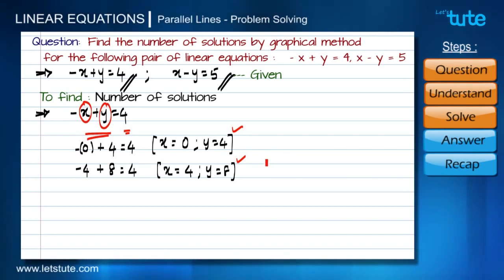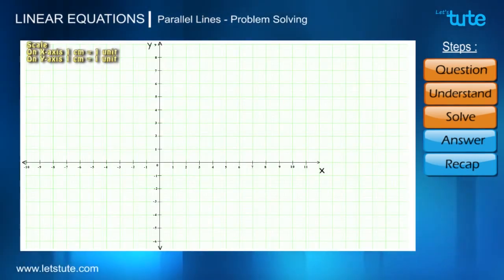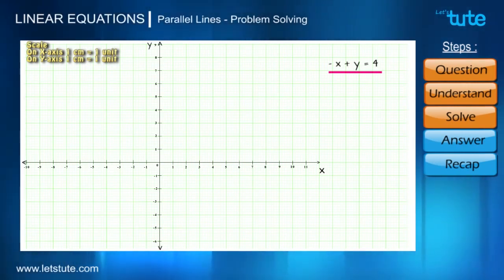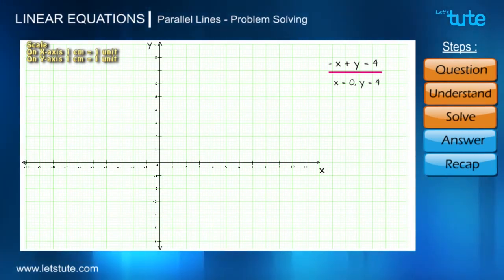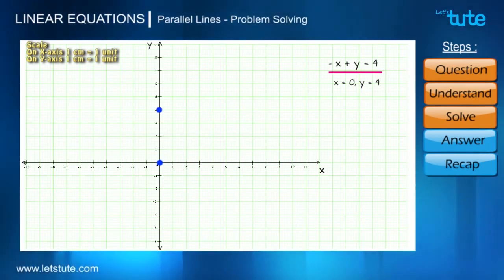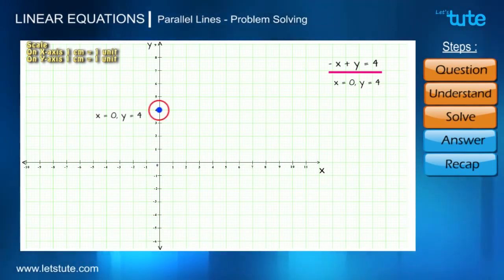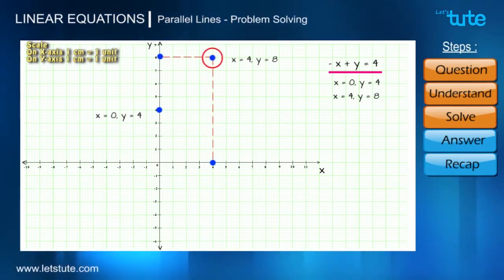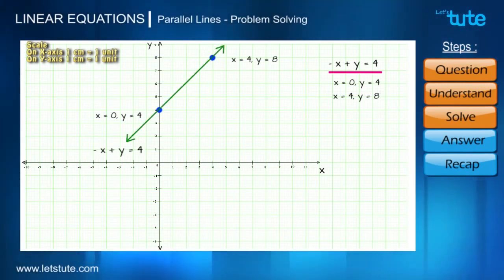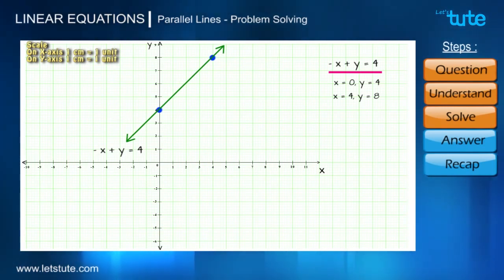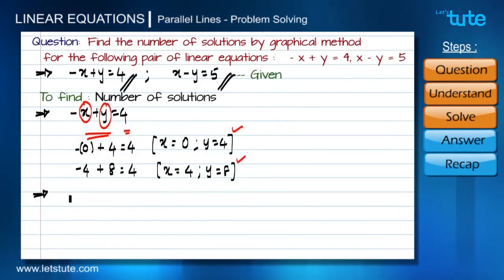Here is the graph. We have to draw a line for the linear equation -x + y = 4. The first set of values is x = 0, y = 4. Since x is 0, this point lies on the y-axis at point 4 — here is the point. The next set is x = 4, y = 8 — the point is over here. Let's join these two points and we get a straight line for the equation -x + y = 4.